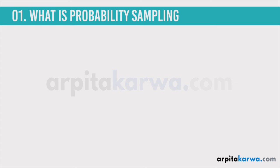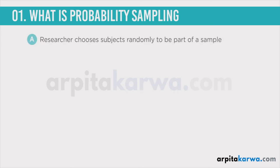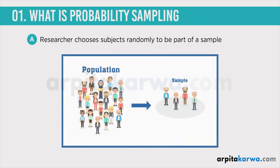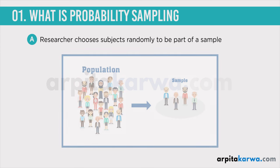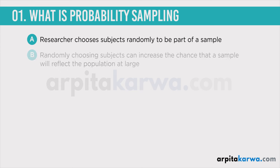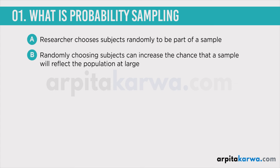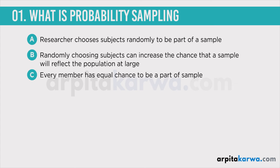Probability sampling is a type of sampling where the researcher chooses subjects randomly to be a part of the sample. We all know that there is a population and out of that population we choose certain people to be a part of our sample on whom the research will actually be conducted. When the researcher randomly chooses people from the population to be part of the sample, that is known as probability sampling. Randomly choosing subjects increases the chance that the sample will reflect the population at large, because every member of the population will have an equal opportunity to be a part of the sample.